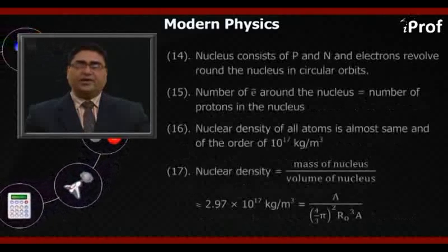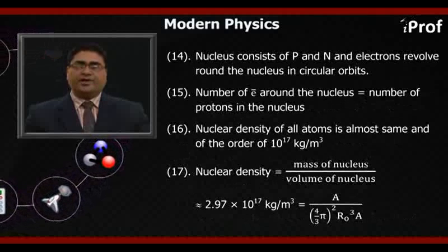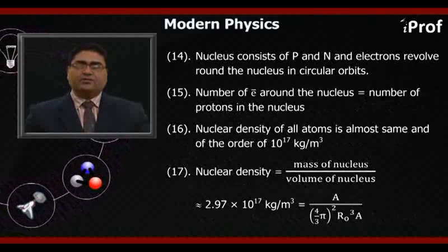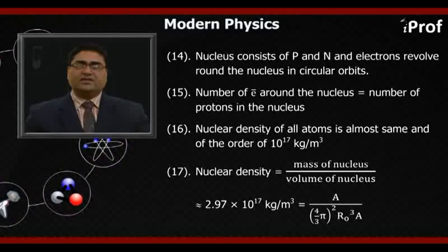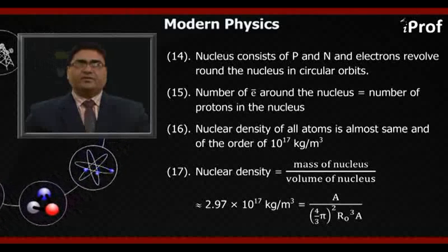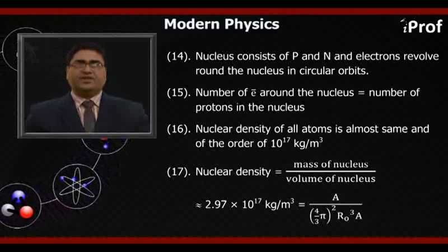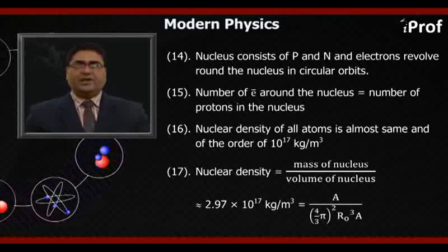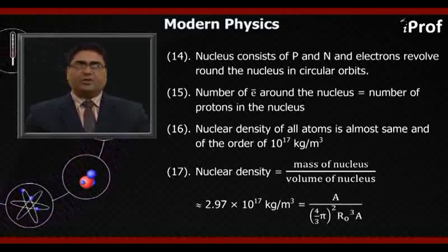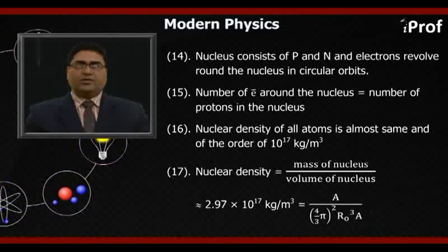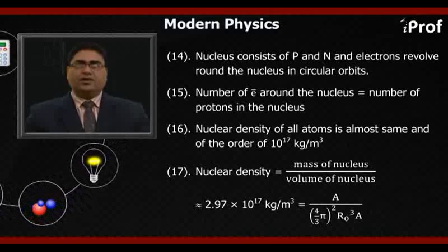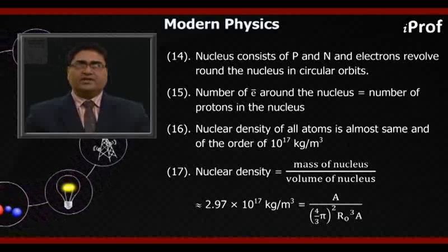Fourteenth, nucleus consists of proton and neutron and electrons revolve around the nucleus in circular orbits. Fifteenth, since atom is electrically neutral, number of electrons around the nucleus equals number of protons in the nucleus.